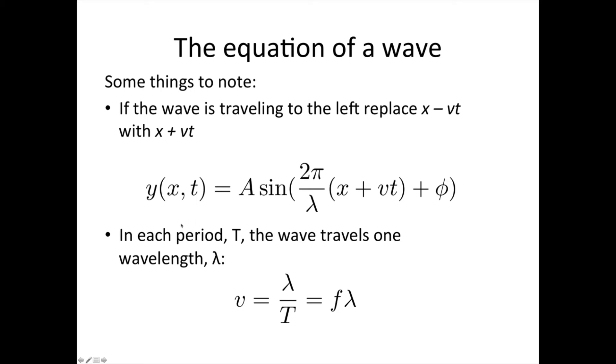Now, we've already learned a bit about this equation, but we know that in each period, the wave travels one wavelength. So the velocity of the wave is given by the wavelength divided by the period, and the inverse of the period is the frequency. So we've got v is equal to fλ, which we'll now be making use of to replace the v in our wave equation here with fλ to simplify it down a little bit.